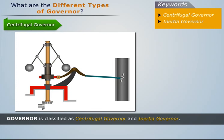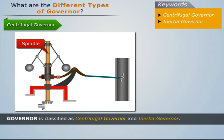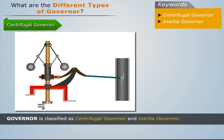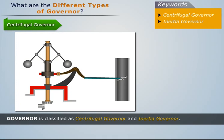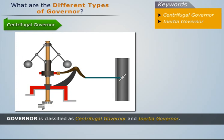The centrifugal governor is a commonly used governor. It consists of a pair of equal masses known as the governor balls or fly balls, which rotate with a spindle. The spindle is driven by an engine through bevel gears. The working of this governor depends upon the centrifugal effects produced due to the governor balls. When the speed of an engine increases, the balls tend to rotate at a greater radius away from the axis. This causes the sleeve to rise up, and vice versa at low speeds.